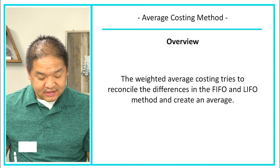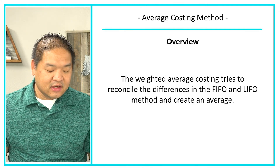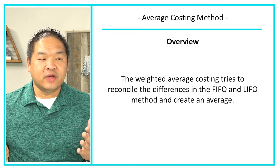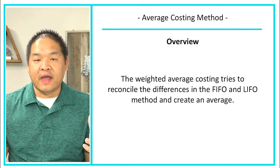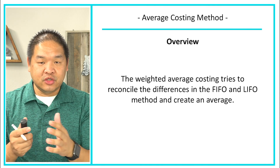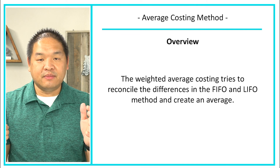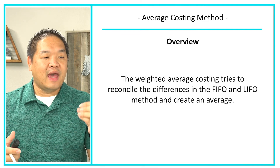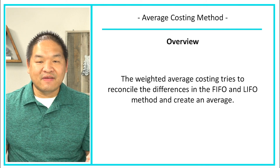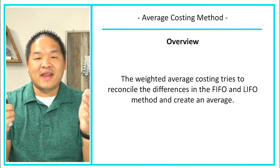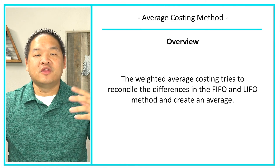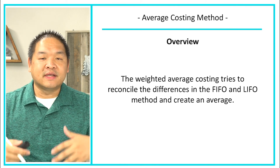The weighted average costing system tries to reconcile the difference between the FIFO and LIFO methods and create an average. If we calculate cost of goods sold, and FIFO is on one end and LIFO is on the other, weighted average is going to be somewhere in the middle. The same applies to ending inventory — weighted average falls in between both methods.